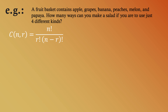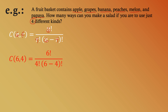We will use the combination formula. Based on our problem, how many elements are involved? Counting: apple, grapes, banana, peaches, melon, and papaya — we have six elements, so n equals 6. Our r is the number of elements to be taken, and we are asked to use just four different kinds, so r equals 4. Transforming into factorial notation: C(6,4) = 6! over 4! times the quantity 6 minus 4 factorial.